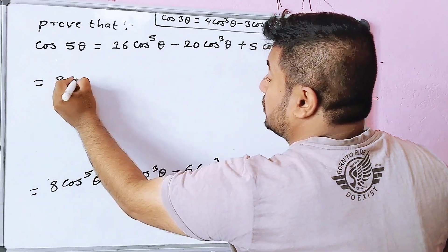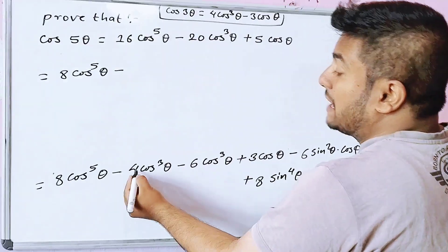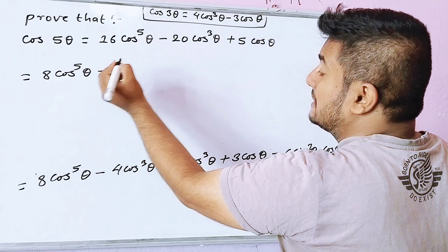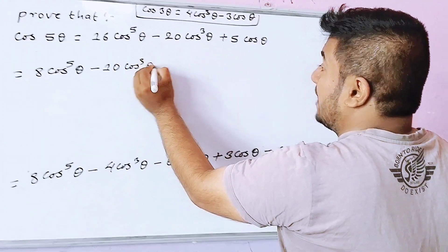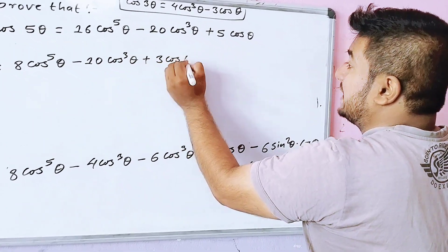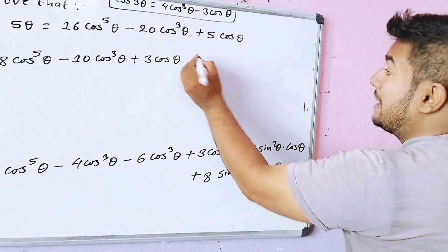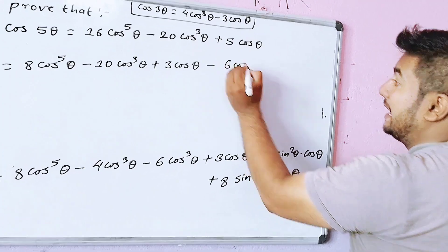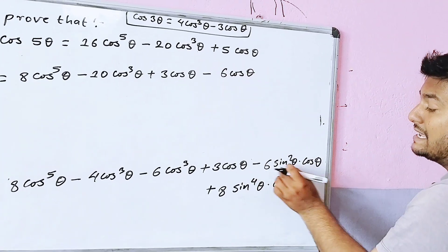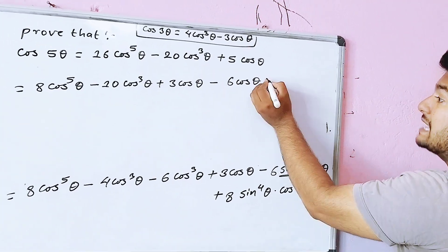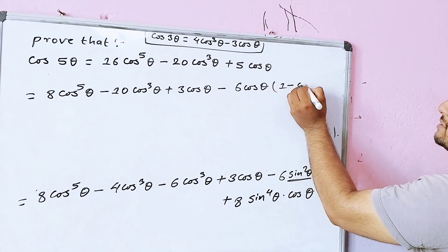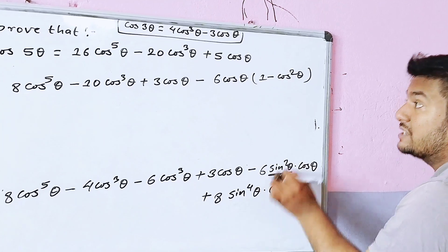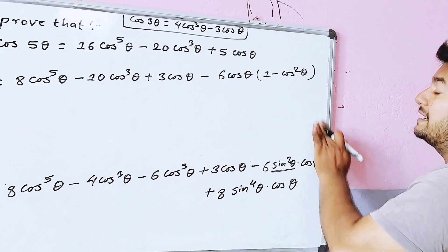So we have 8 cos to the power 5 theta minus 4 cos cubed theta minus 3 cos theta, plus 3 cos theta, now minus 6 cos theta. For the sine squared theta term, sin squared theta equals 1 minus cos squared theta. So 6 cos theta into sin squared theta becomes 6 cos theta into (1 minus cos squared theta).